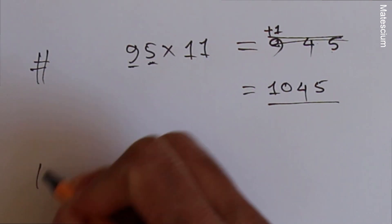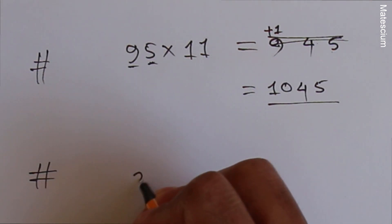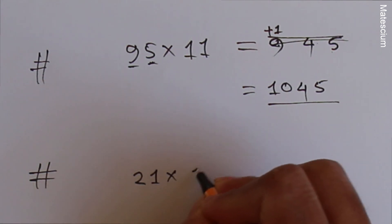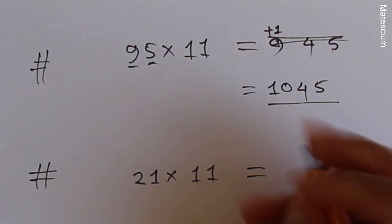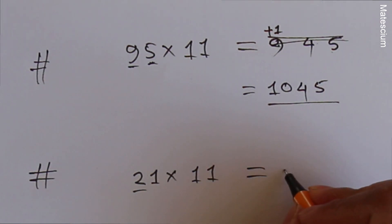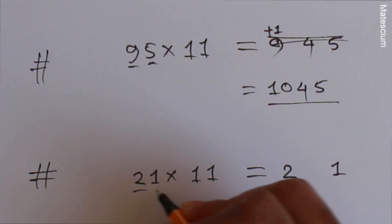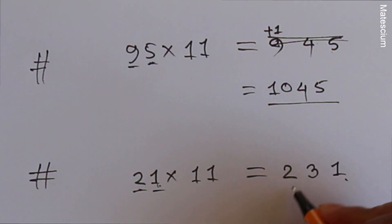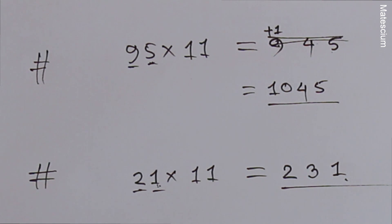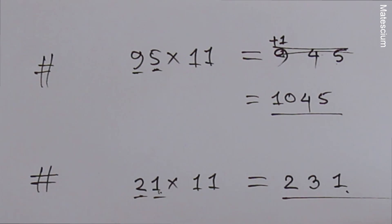Let's try another number: 21 times 11. Same way. Write this 2 on one side and 1 on another side and simply add these two numbers. 2 plus 1 is 3. That means 231 is the answer. Isn't it simple? Math is really fun. If you know the tricks, mathematics is not so complex.